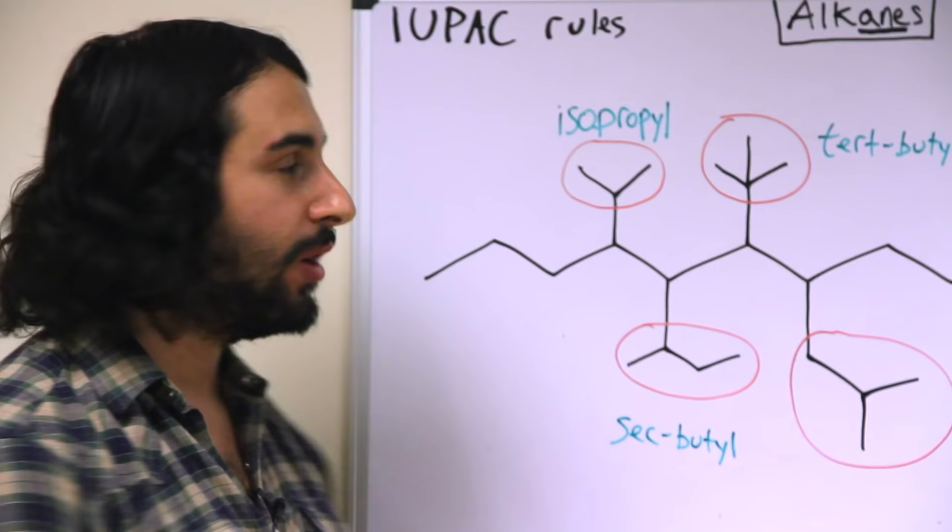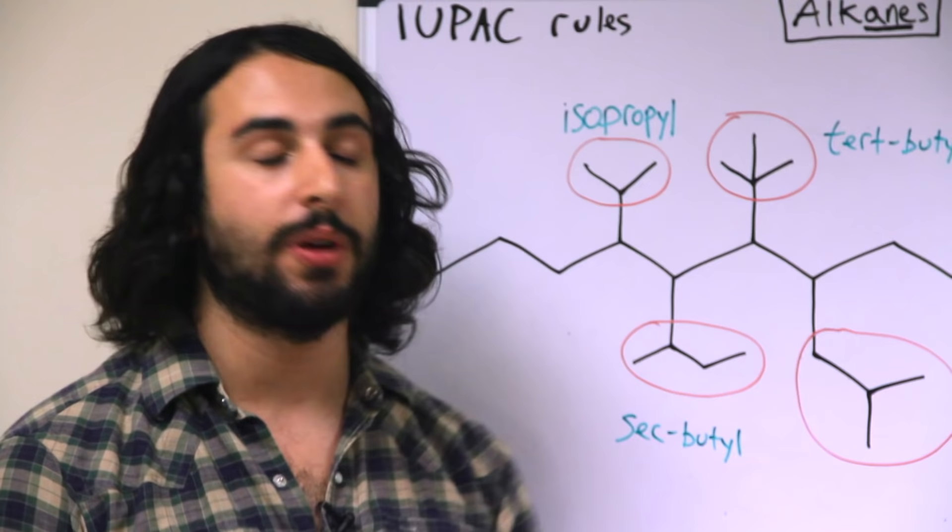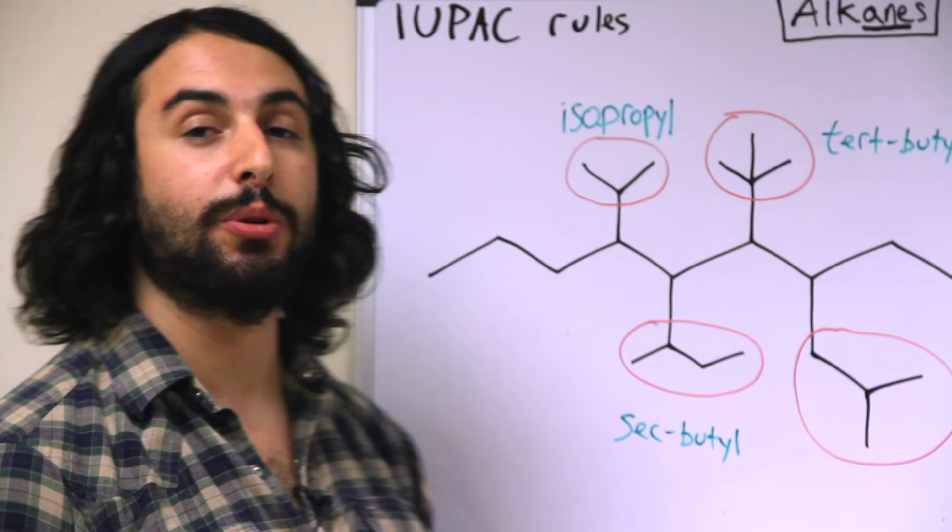And iso is regarding the shape. Basically, if it were a straight chain propyl group we would just have one, two, three carbons extending from the main chain, but this is an isopropyl group because the center carbon is connected to the main chain.